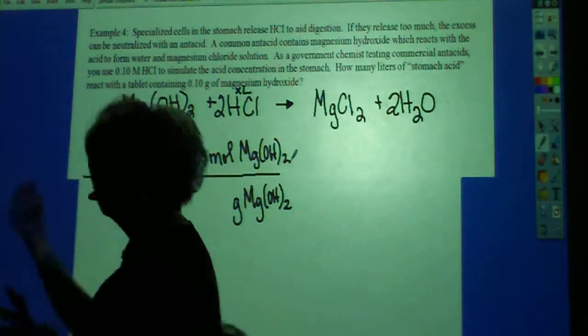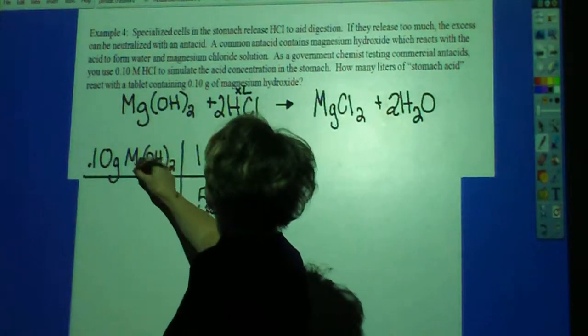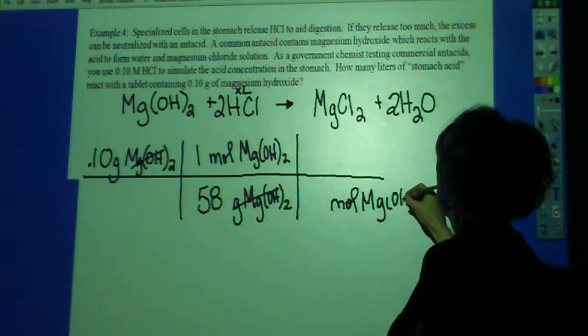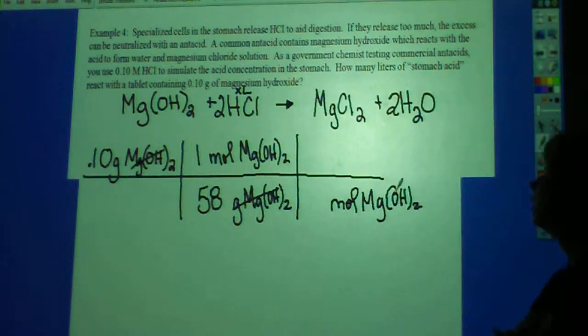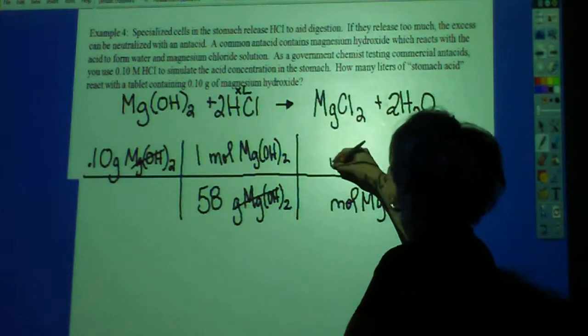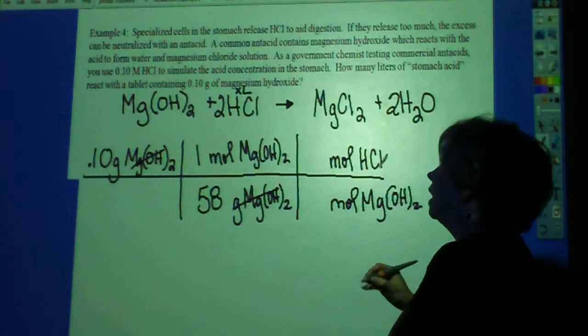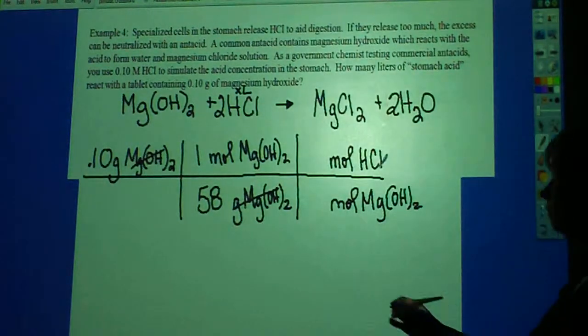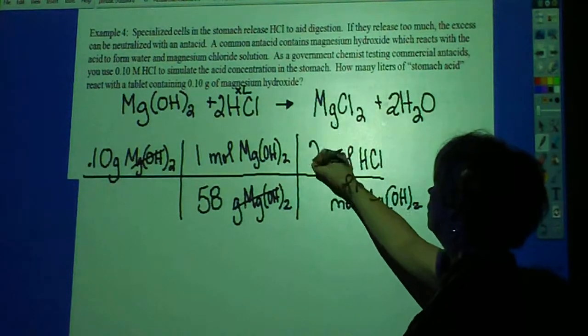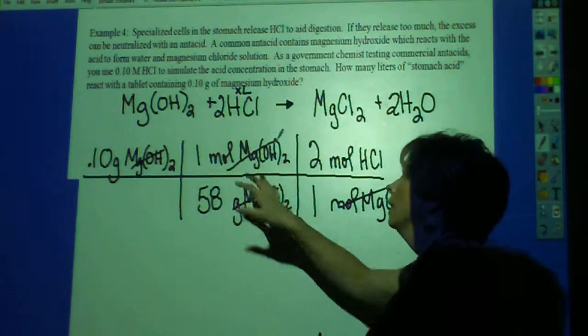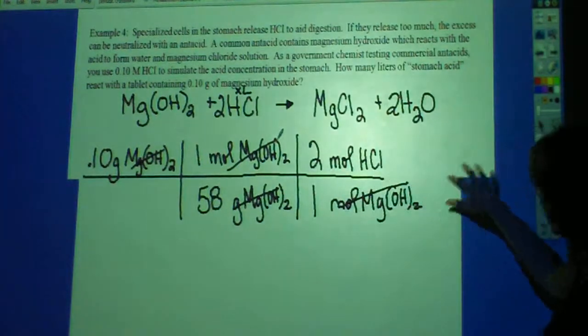And I've already calculated that, about 58 grams for that molar mass. So now I'm in moles of magnesium hydroxide. Where do I want to go from there? The ratio of the moles of the hydrochloric acid? Absolutely. I can find out how many moles of hydrochloric acid would be used to neutralize that amount of magnesium hydroxide. So these numbers are the coefficients. So I have 2 moles of hydrochloric acid for every 1 mole of magnesium hydroxide.